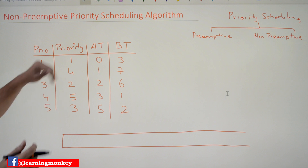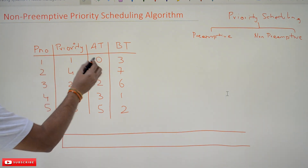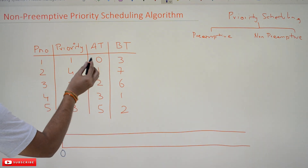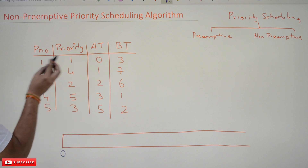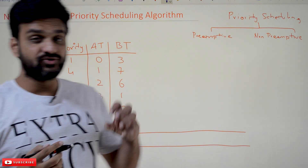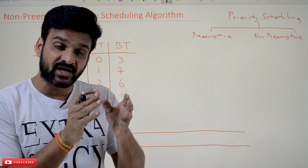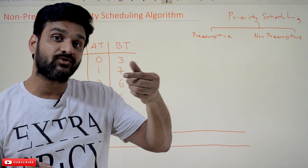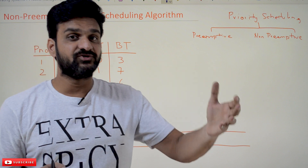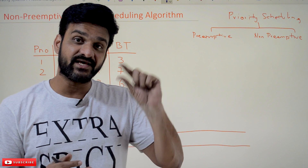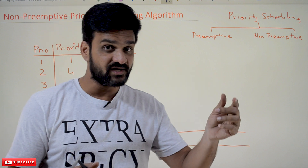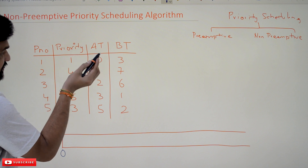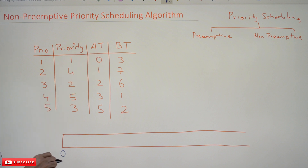We will understand this concept using an example. At arrival time zero, we have only one process, P1. One important thing about priorities: usually the lowest number has the highest priority and the highest number has the lowest priority. This is how things work normally, though it may also be in vice versa order. In our case, we will consider the lowest number as having the highest priority and the highest number as having the lowest priority.